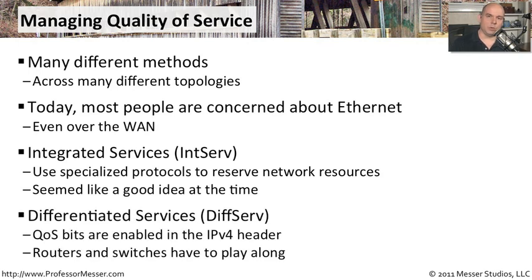Another method is called DiffServ, or Differentiated Services. DiffServ means that you are setting certain bits within your IPv4 header — it's built into TCP/IP — and you simply set bits within that header to indicate that a particular packet has a particular priority associated with it. That also means that the other devices on your network have to understand those bits: your routers, switches, and firewalls all have to take those bits into account. Unfortunately, you have the same scenario where not all devices will respect those DiffServ bits, so that method is perhaps not as widespread as we would like either.